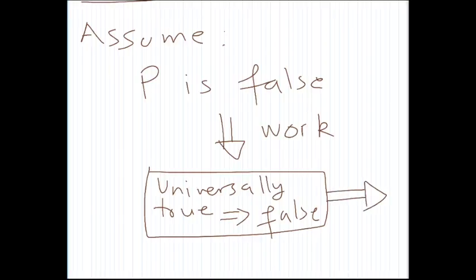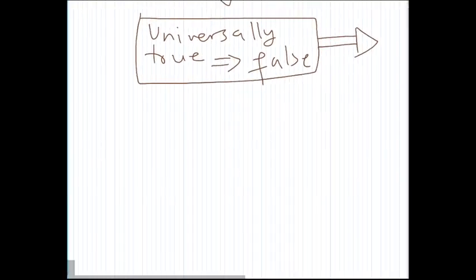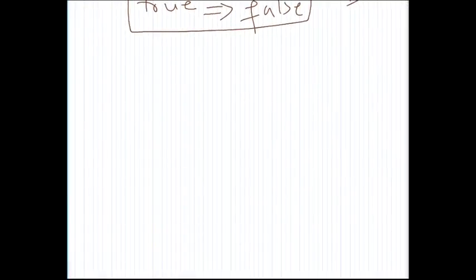known universal fact to be false. Okay, so let's see how it works. Let's say our P is that given